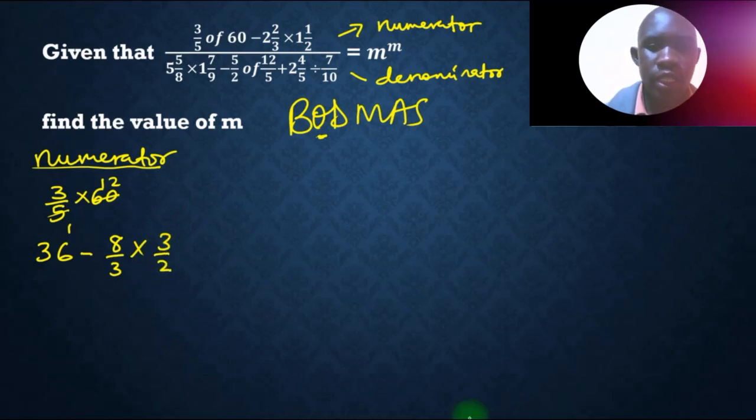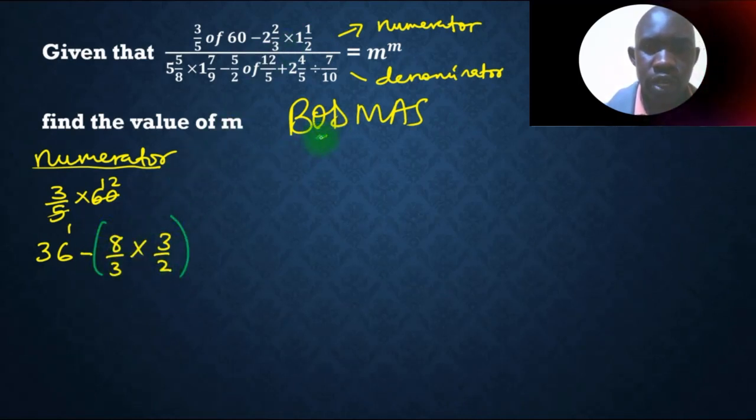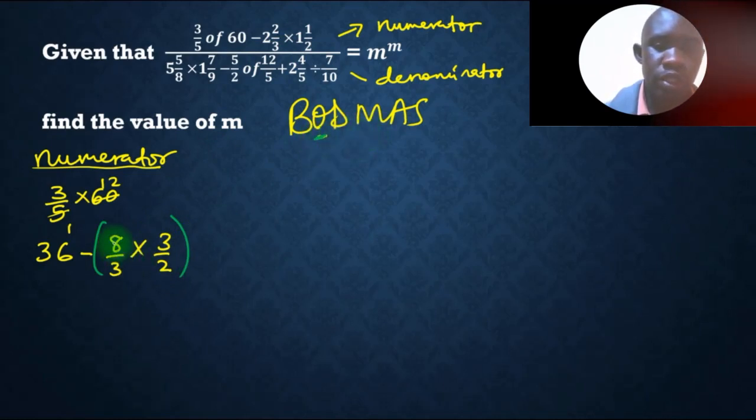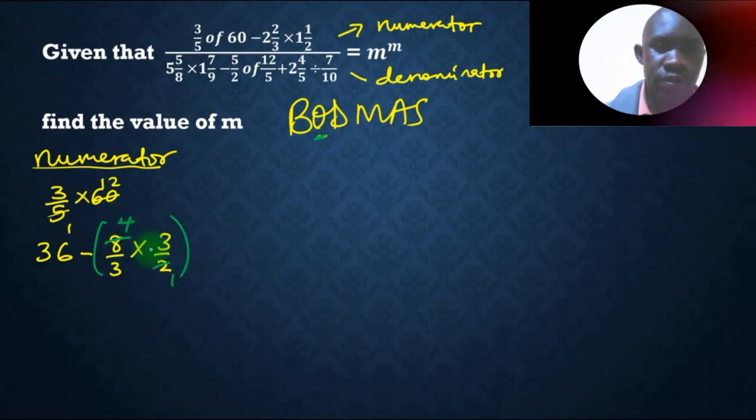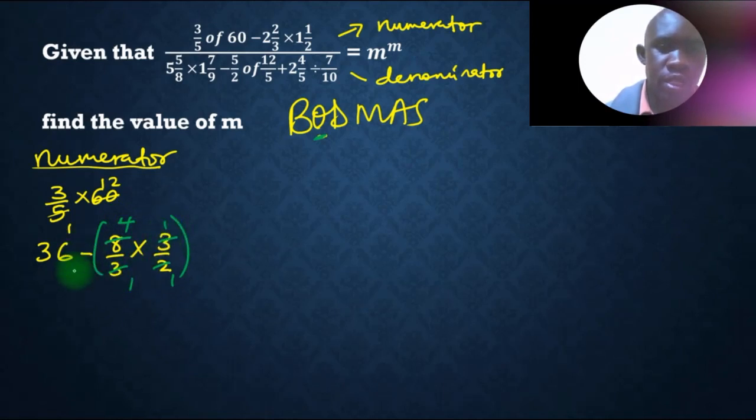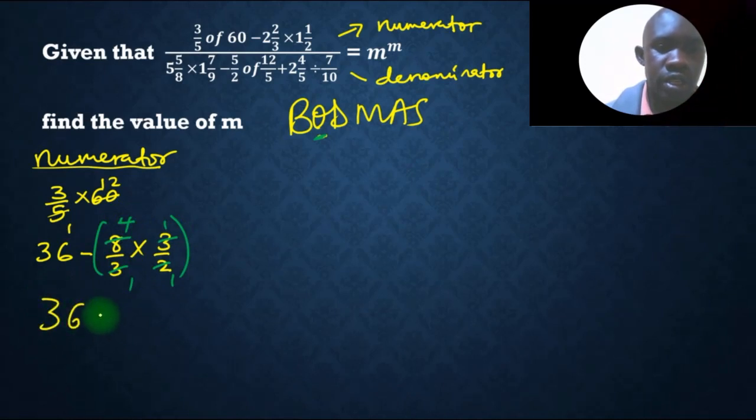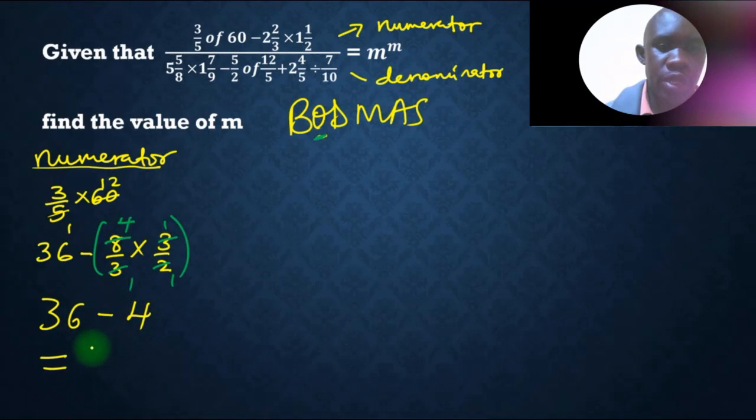So that is 2 times 1, which is 2 plus 1, that is 3 over 2. So in our case here, we can work out the multiplication part because after of, we don't have division, then we have multiplication. So by 2, 1, by 2, 4. Then by 3, 1, by 3, 1. So we have 36, that is 36 minus 4. So the numerator we end up getting 32.